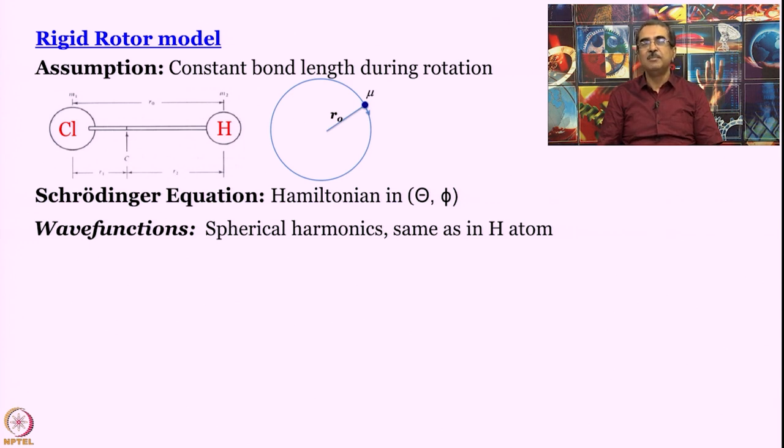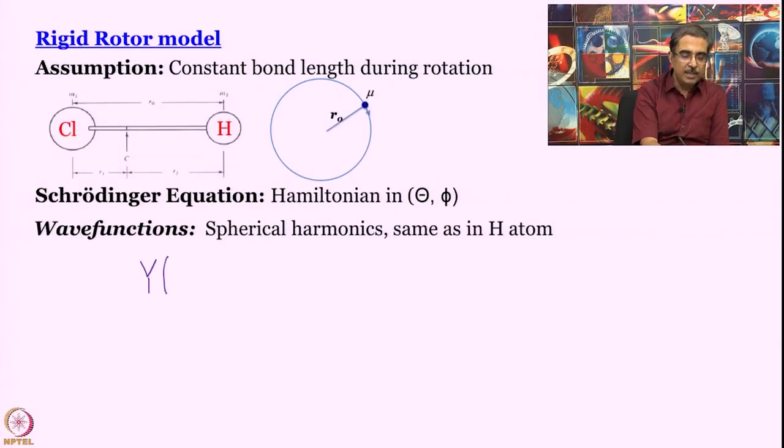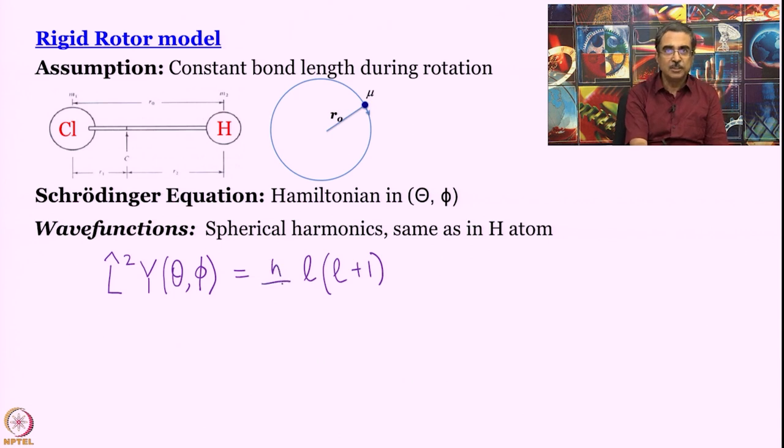So what we will do now is that we will try to see what the solutions are. In fact, since the Schrodinger equation is similar to that of hydrogen atom angular part, the wave functions are also the same as in hydrogen atom - spherical harmonics. Since we know that the wave functions are spherical harmonics same as hydrogen atom, we can try to work with them. What do we know about the spherical harmonics of hydrogen atom? We know that the spherical harmonics we have written them as Y which are functions of theta and phi.